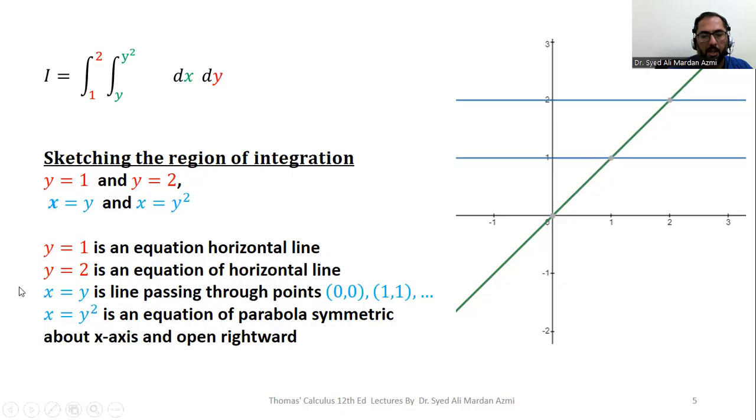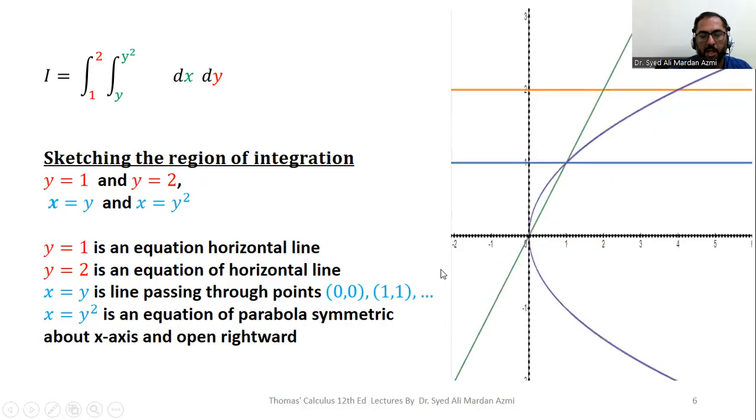Note that this x equal to y is plotted with green color. It passes through the points (0,0), (1,1) and (2,2). In the next step, we have plotted the parabola. Here, I have changed some colors so that you will be more focused.